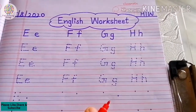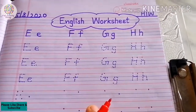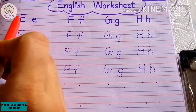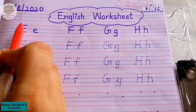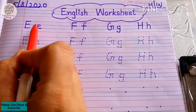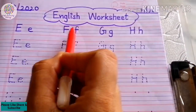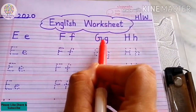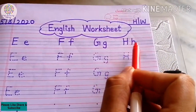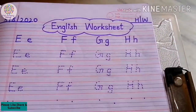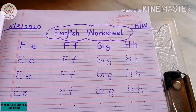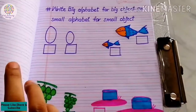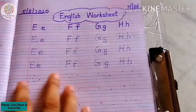Hello Kids! Today we will do an English worksheet. First we will write Mama E, Baby E, Mama F, Baby F, Mama G, Baby G, Mama H, Baby H, and after that we will do a worksheet. So let's start.